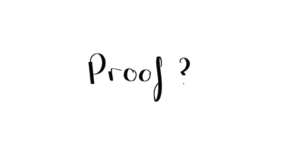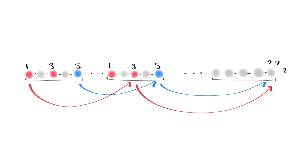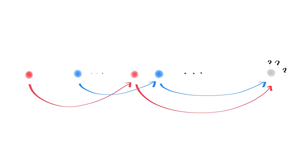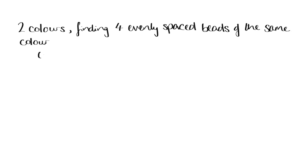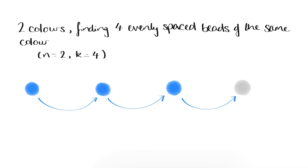How on earth would we go about proving van der Waerden's theorem for every possible value of n and k? For this, we need to take a step back and look at what we were really doing in our earlier proof. We found ourselves two arithmetic progressions of length 2, each coloured monochromatically in a different colour, and which had the same third term. Then whatever colour the bead corresponding to the third term was, it was forced to form a monochromatic progression of length 3 with either the red sequence or the blue sequence. So if we wanted to prove the case n equals 2, k equals 4, then we might instead try to find two arithmetic progressions of length 3 — one coloured red and one coloured blue — with the same fourth term.